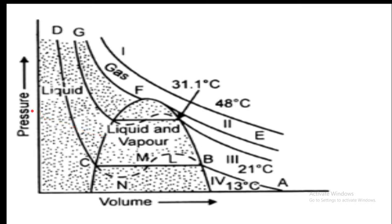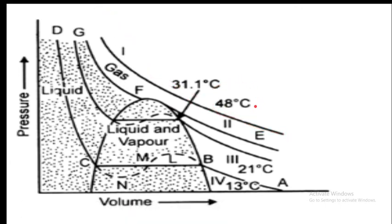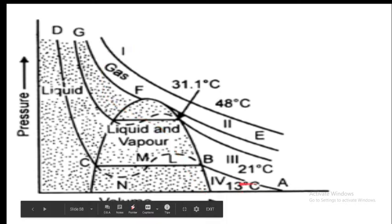In the Andrews isotherm, pressure is plotted on the y-axis and volume is plotted on the x-axis. It is an isotherm, meaning temperature is kept constant. The first isotherm represents the isotherm at 48 degrees centigrade, the second isotherm is at 21 degrees centigrade, and the third isotherm is at 13 degrees centigrade.